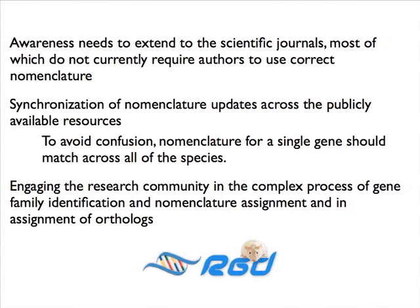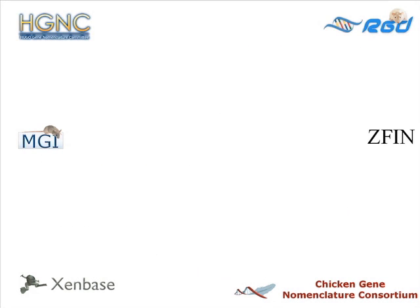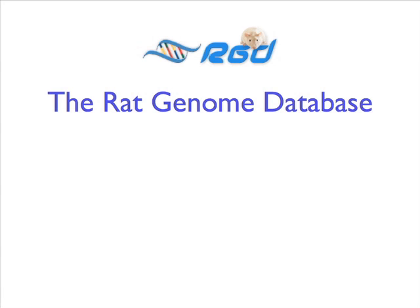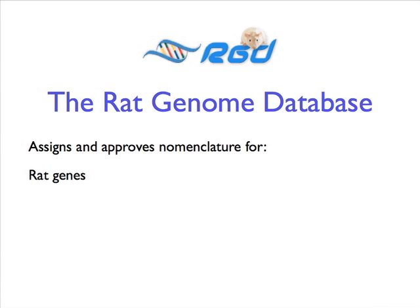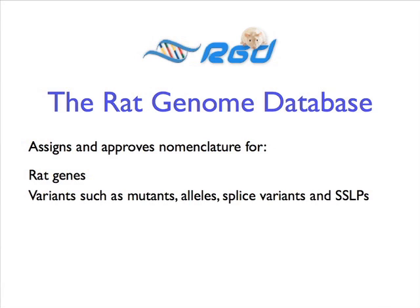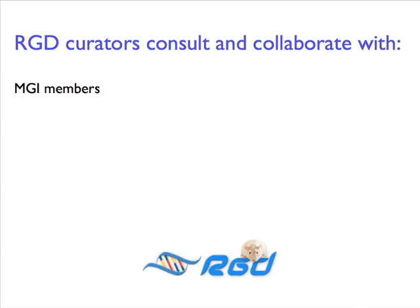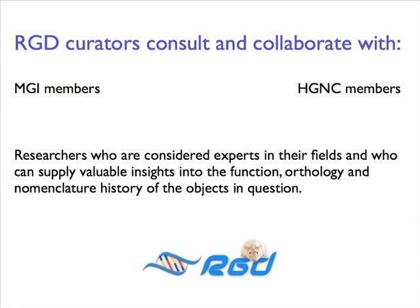Many of the established model organisms used in research already have their own nomenclature organizations. This video series will concentrate primarily on nomenclature for the rat. This work is done by curators at the Rat Genome Database. RGD assigns and approves nomenclature for rat genes, for variants such as mutants, alleles, splice variants, and SSLPs, for quantitative trait loci, and for strains. During this process, RGD curators consult and collaborate not only with members of the mouse and human nomenclature committees, but also with members of the research community who are considered experts in their fields, and who can supply valuable insights into the function, orthology, and nomenclature history of the objects in question.